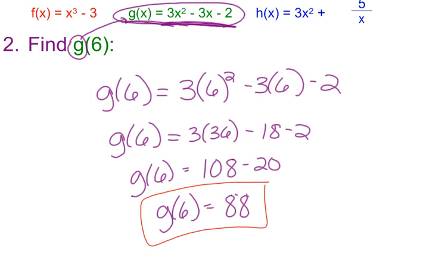So now, again, my ordered pair would be (6, 88). And you'd have to picture the green equation here is actually a parabola. So we can envision what that looks like. And so one of the ordered pairs in that parabola is (6, 88).